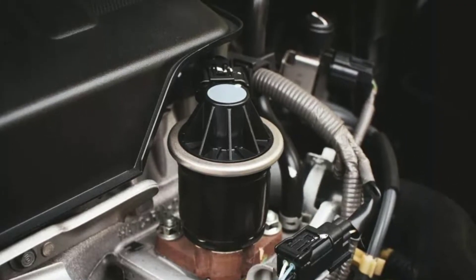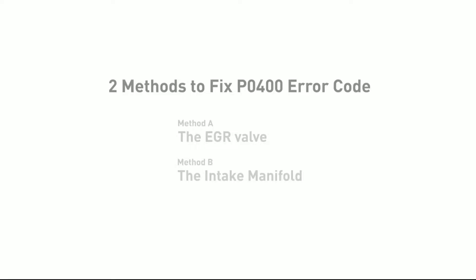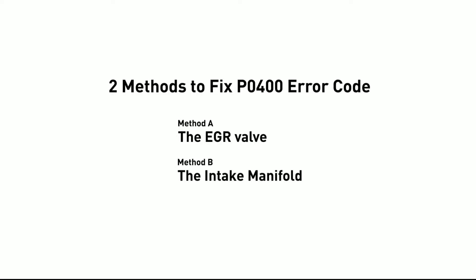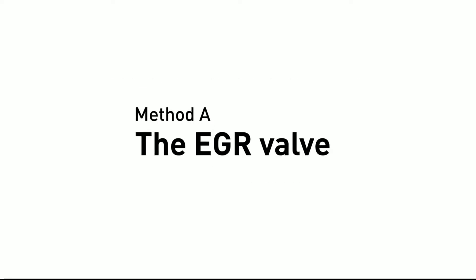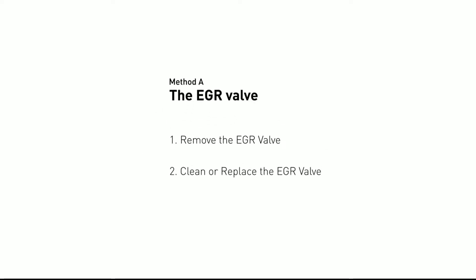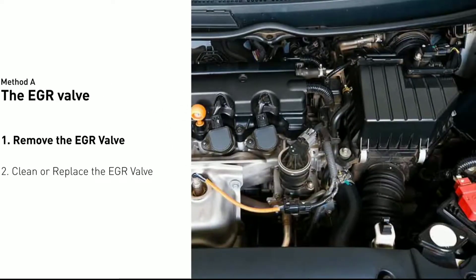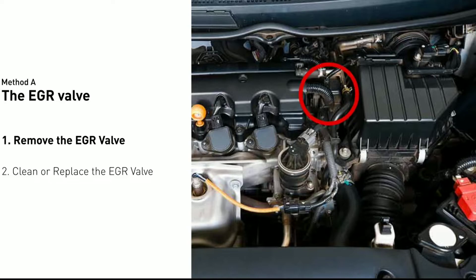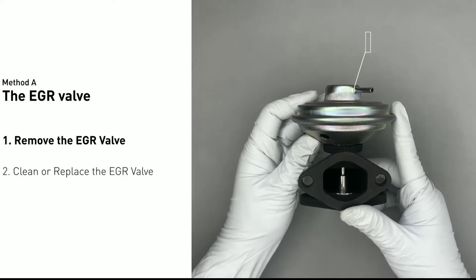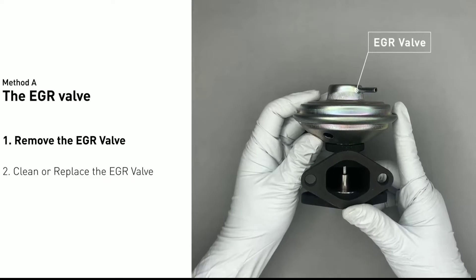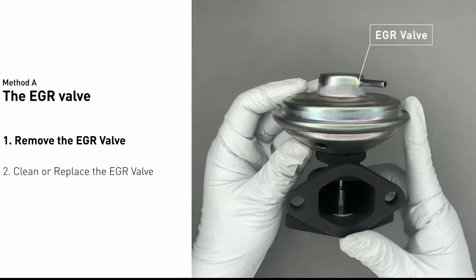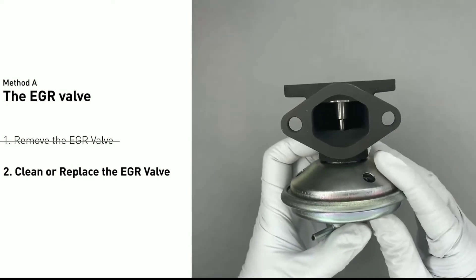Step two: inspect the EGR valve. Start by inspecting the EGR valve and look for any signs of damage or carbon buildup. If it's visibly clogged or damaged, it may need replacement. Step three: clean the EGR passages. If the EGR valve is in good condition but you suspect a clogged EGR passage, remove and clean it thoroughly.